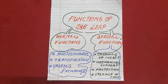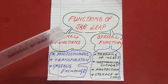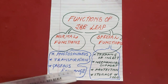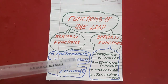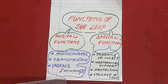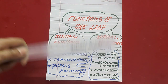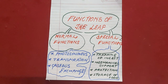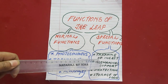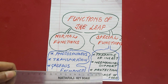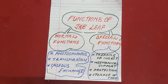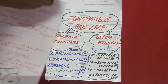The normal functions are: first, photosynthesis — this we are going to discuss in detail. Then transpiration and gaseous exchange. So photosynthesis, transpiration, and gaseous exchange are the normal functions of the leaf. The special functions — there are many, but in your book only some are mentioned: trapping of insects, mechanical support, protection, and storage of food. Now we will start with the normal functions of the leaf.